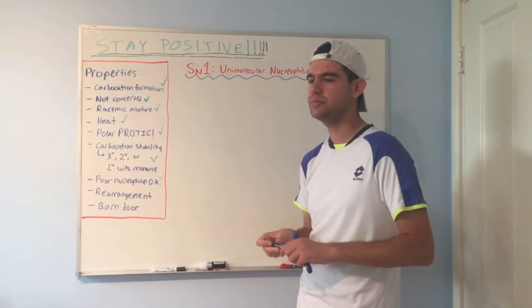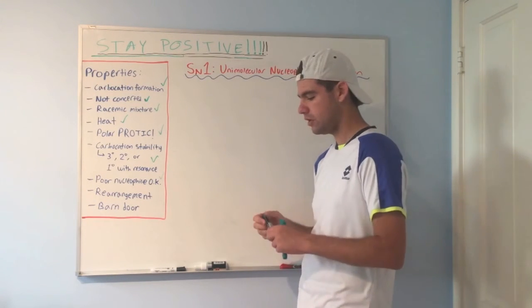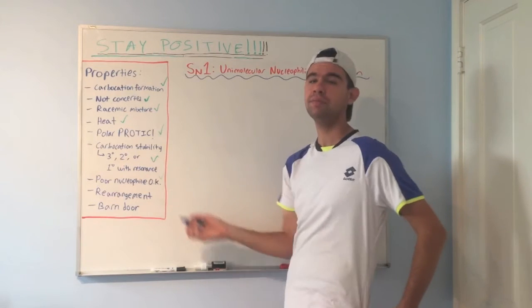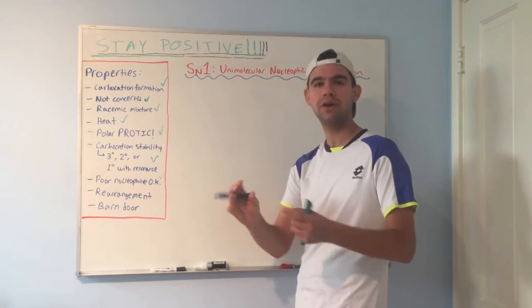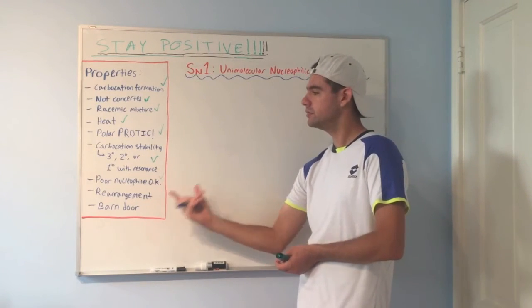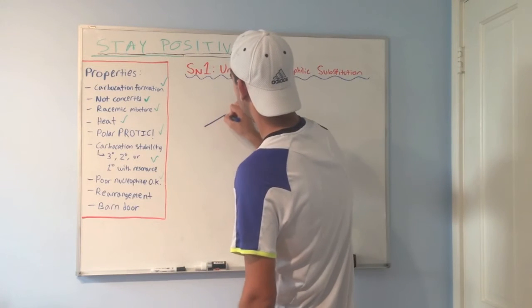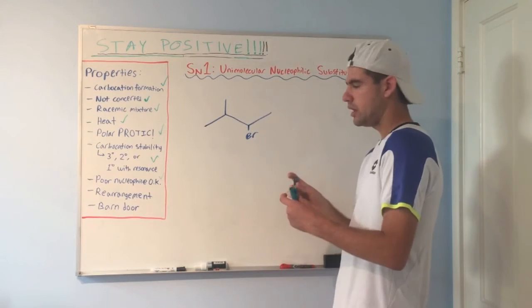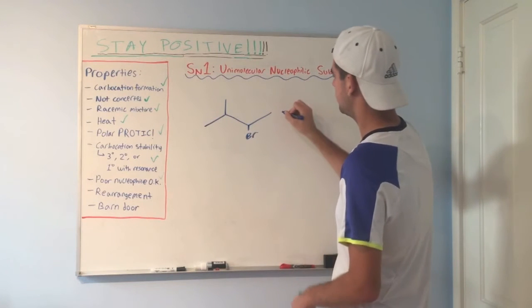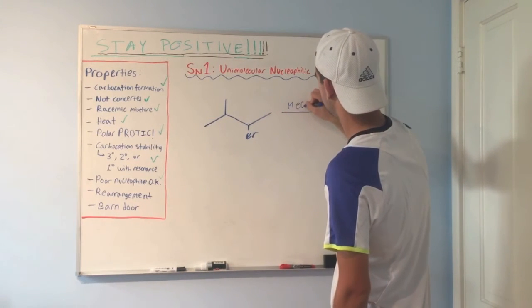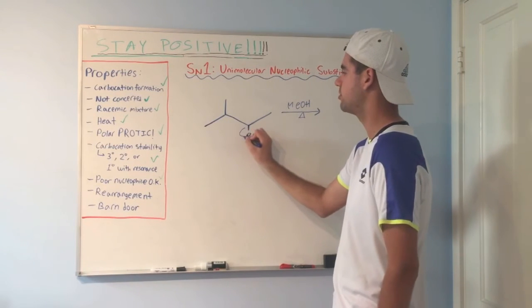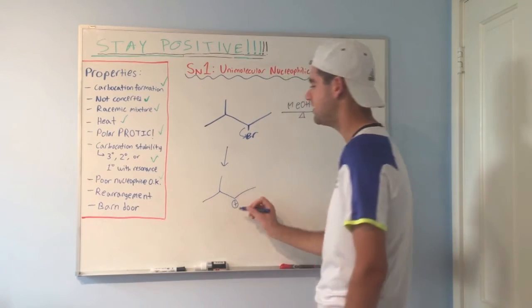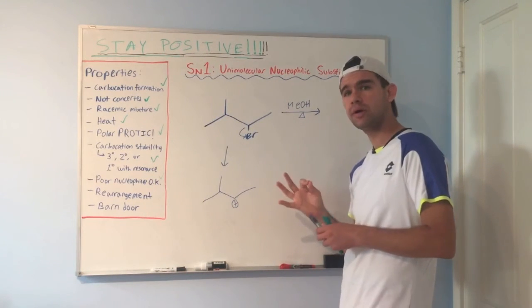Now let's talk about rearrangement. Rearrangement is a confusing topic for a lot of people. So let's get into that. Remember we said that tertiary is better than secondary. Secondary is better than primary. So sometimes atoms will rearrange, molecules will rearrange their atoms in order to make a more stable carbocation. So if we have something that looks like this, if we just react this with methanol, just like any other MEOH that's methanol and heat, we could just kick off this bromine and that's it and form the carbocation here. That's a secondary carbocation. But can we make a more stable carbocation? The answer is yes.